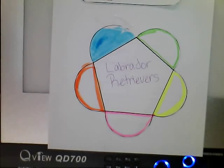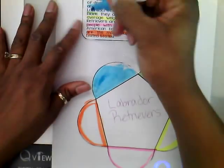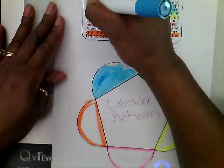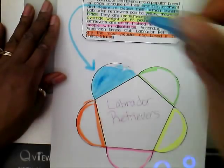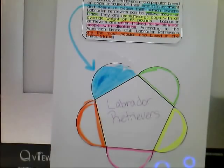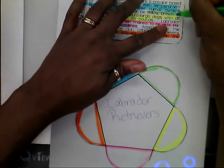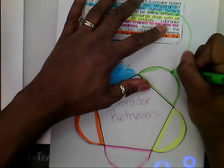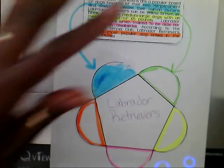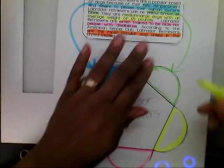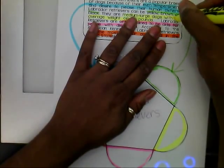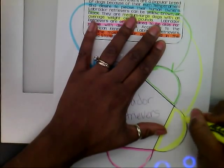All I have to do is transfer the information to the correct petal. Remember, it's already color-coded. So what I highlighted in blue, I'm going to transfer to that petal. What I highlighted in green, which was the information about their color, I will transfer to this petal. What I highlighted in yellow will go here.